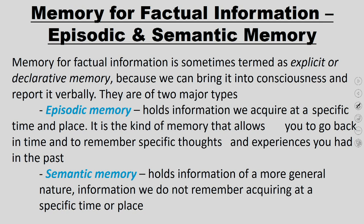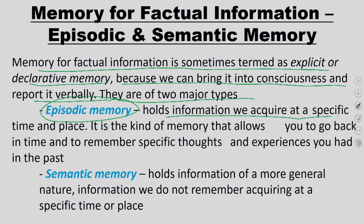Memory for factual information is termed declarative or explicit memory because we can bring it into consciousness and report it verbally. Episodic memory holds information acquired at a specific time and place — it has auto-noetic consciousness, meaning these memories can be plotted on a space-time axis. For example, thinking about your first day at college unfolds in a timely, sequential manner — morning first, then events one by one.